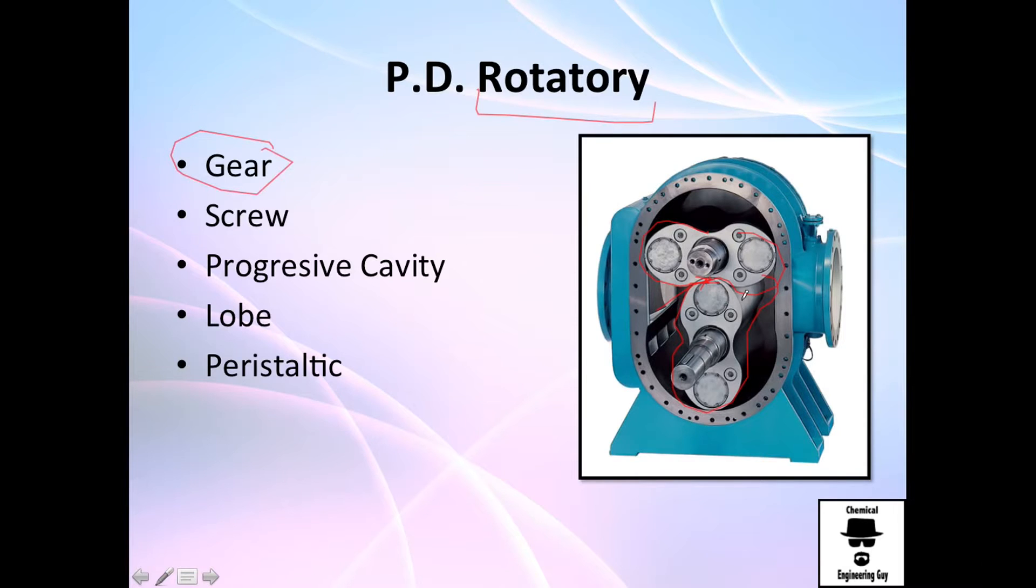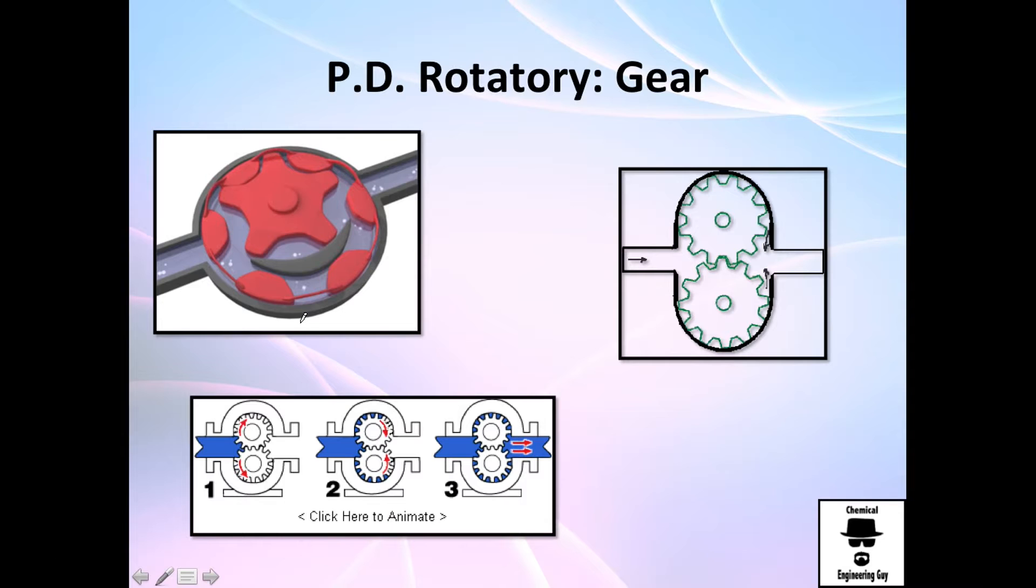We have gear pumps, which will be something like this—actually I think these are lobes. We have screw, peristaltic, and progressive cavity. The most common ones are gear, screw, and lobe. These are the most common rotary pumps.